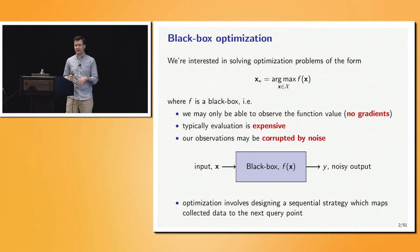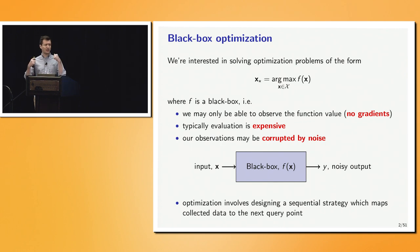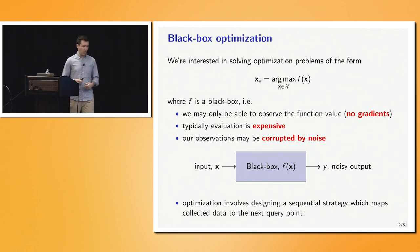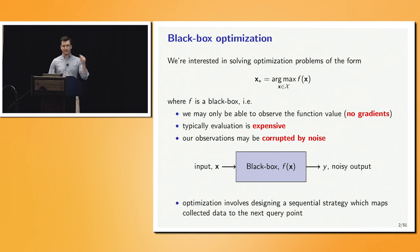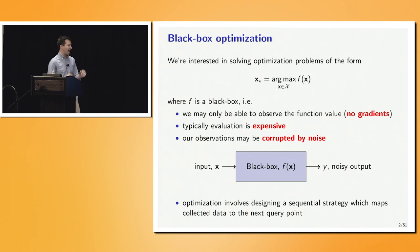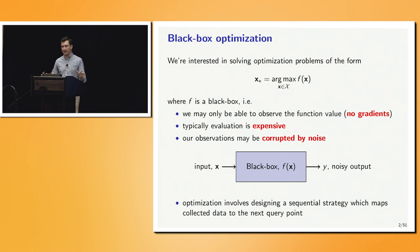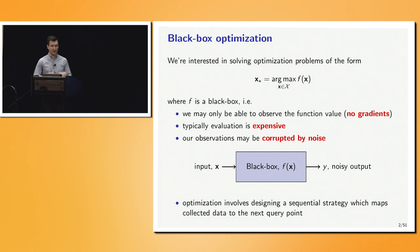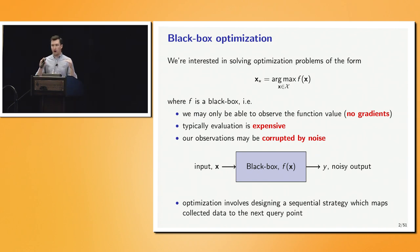Black box optimization: the problem we're interested in solving is we have some function f, but we don't have direct access to f. We can't take gradients of f. All we know is that I can query f at some input location x and get back a noisy estimate of the actual value. There's some true latent value I'm interested in optimizing, but I never have direct access to it. It's a black box because I don't have any gradients. There are extensions that incorporate gradient information, but in general I'll assume no gradients.